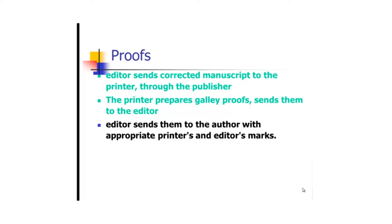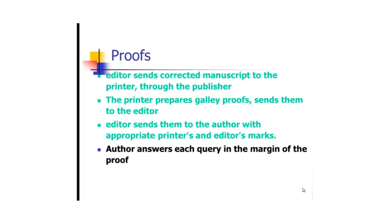Sometimes if they do not give you the proofs, you can have a situation where the paper comes out published but they have skipped some sentences. They can also make mistakes — they skip sentences and you get embarrassed because people think it is you who did it, while it was them. So you have to be very careful when reading the proofs. You read through and try to respond very swiftly, addressing any author queries the editor was not clear about.